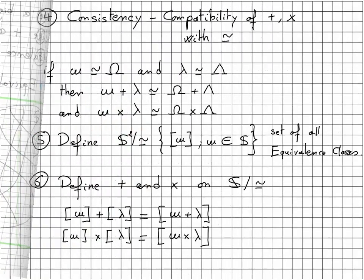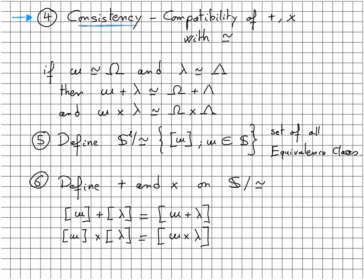Step four is now to verify consistency or compatibility between addition and multiplication and the equivalence relation. In other words, we need to check that if small omega is equivalent to capital omega and if small lambda is equivalent to capital lambda, then small omega plus small lambda is equivalent to capital omega plus capital lambda, and the same should be true here for multiplication. Once again, I'm going to leave this to you.